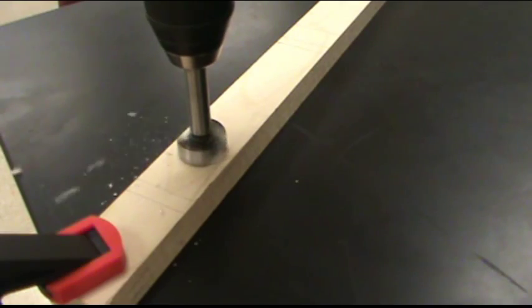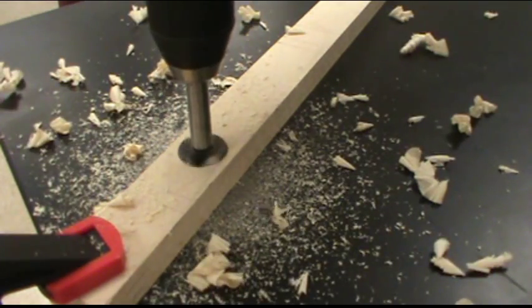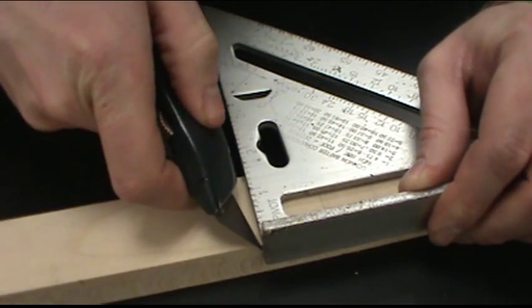In order to make that pocket for the pickup to sit in, the easiest way is with a Forstner bit. We use an inch and an eighth Forstner bit to drill that hole. You could also chisel it or find any other number of ways to cut that material out.